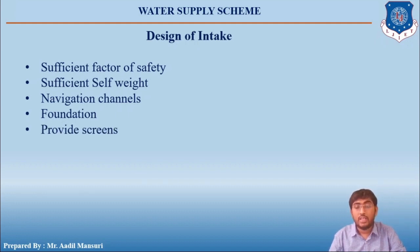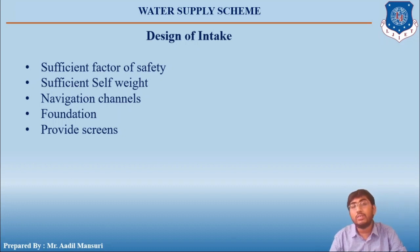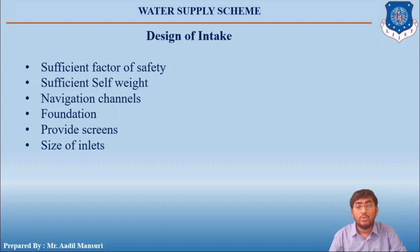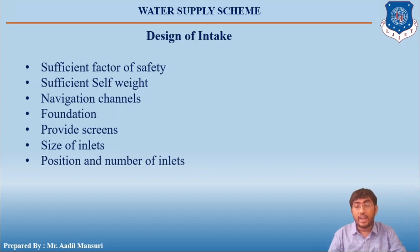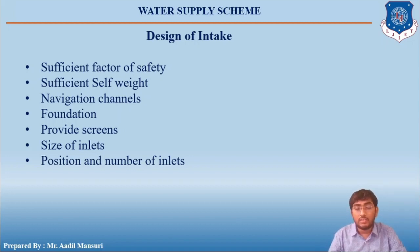Next is providing a screen. To avoid the entrance of large and medium objects and fishes, a screen should be provided on the inlet side so that all floating particles do not enter the intake structures. Next is the size of the inlets — inlets should be of sufficient size to allow the required quantity of water to enter. The position of inlets should be such that they can admit water in all seasons near the surface where quality of water is good, and the number of inlets should be more so that if any one is blocked, water can be withdrawn from other entries.